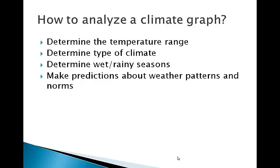The purpose of climate graphs is to allow geographers and climatologists to make predictions and analyze basic climate information in a fairly clear and concise way. By looking at a climate graph we can determine the type of climate — whether it's maritime or continental, east coast or west coast. We can also determine if that particular location has a wet or rainy season, or perhaps a dry season. The temperature range, calculated from the highest and lowest temperatures on the graph, will confirm whether the climate is maritime or continental, east coast or west coast.